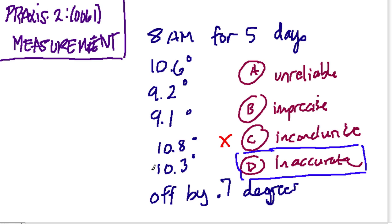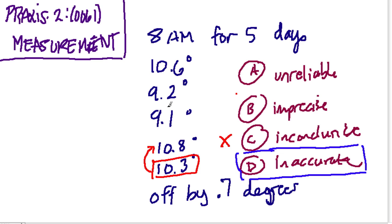Even though 10.3 is off by 0.7 degrees and so is 10.8, you know they're off by the same amount, so you can say things like: 10.3 is lower than 10.8, so maybe the temperature of the lake was lower that day. And imprecise — well, that was my first choice actually. I thought imprecise was definitely the answer. But according to the official definition, imprecise refers to when a measurement is repeatable and reliable. Here we have a thermometer repeating measurements and always making the same error, so in a way it is repeatable.